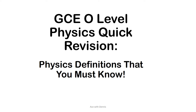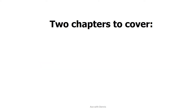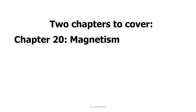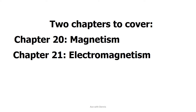This is a GCSE level pure physics revision series. In this video, we are going to discuss important physics definitions that you must know before you take your exam. We will talk about two chapters: Chapter 20, Magnetism, and Chapter 21, Electromagnetism.